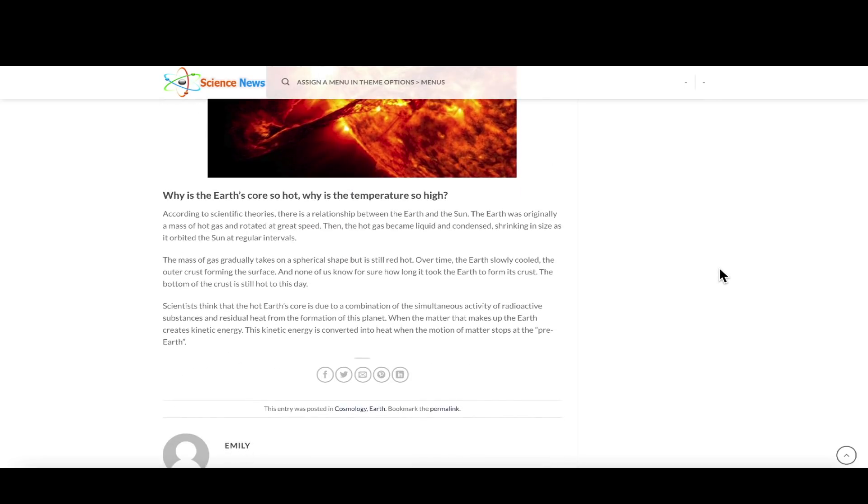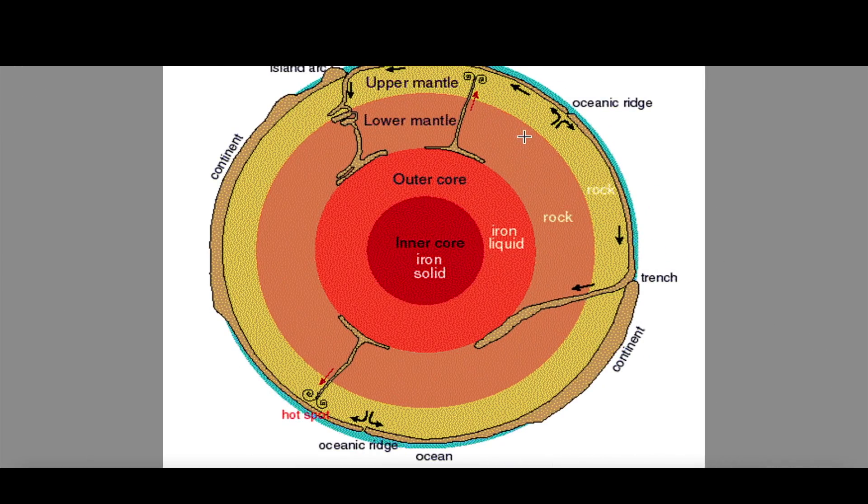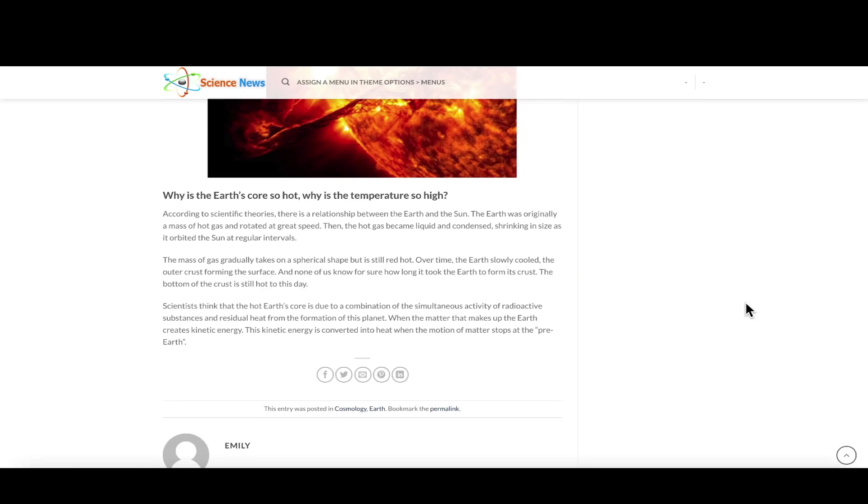Why is the earth's core so hot? Why is the temperature so high? According to scientific theories there is a relationship between the earth and the sun. The earth was originally a massive hot gas and rotated at a great speed, kind of sounds like Jupiter today. Then the hot gas became liquid and condensed, shrinking in size as it orbited the sun on regular intervals. The massive gas gradually took on a spherical shape but it's still red hot. Over time the earth slowly cooled and outer crust formed and none of us know for sure how long that took. The bottom of the crust is still hot to this day. The deeper down you go the hotter it gets. I look at a campfire: when you throw soil on a campfire, it smothers its oxygen source and it can no longer radiate heat. This maintains a very hot temperature as hot as the sun. Scientists think that the earth's hot core is due to a combination of simultaneous activity of radioactive substances and residual heat from the formation of the planet. The heat in the core can most likely be accredited to three factors: the residual heat from when the planet was formed, frictional heating from denser materials falling down to the core, and heat from radioactive materials.